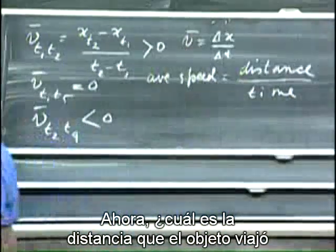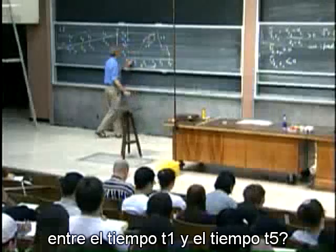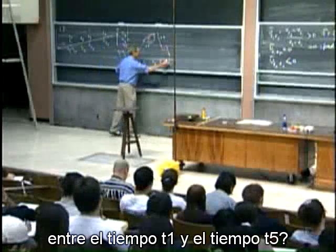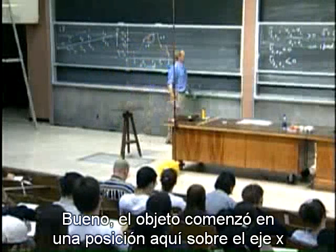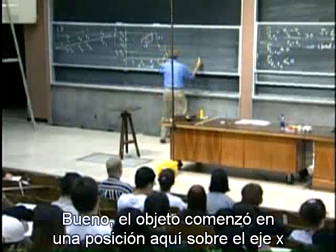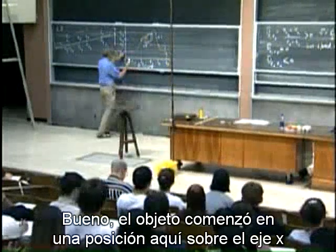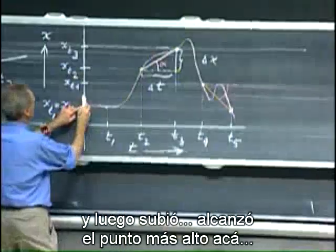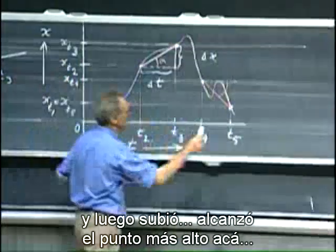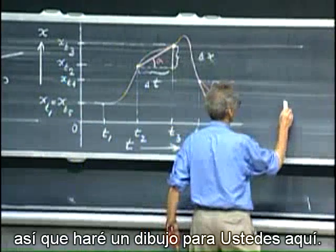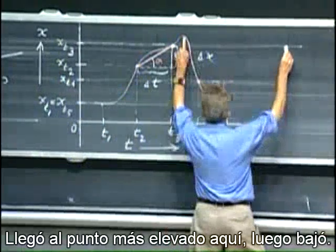Now, what is the distance that the object traveled between time t1 and time t5? Well, the object started at a position here on this x-axis, and then it went up, reached the highest point here, so I'll make a drawing for you here, reached the highest point here.